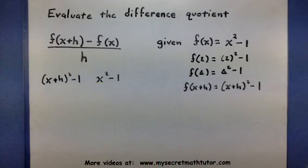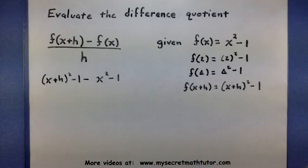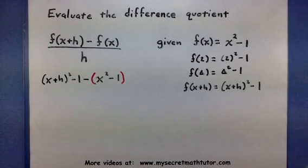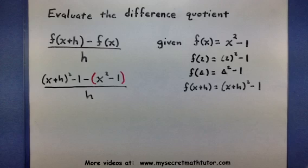And according to the difference quotient, I want to subtract. So subtract f of x. Now make sure that you want to subtract the entire function and use a set of parentheses to remind yourself that that is what you are doing. All divided by h. Looks pretty good.